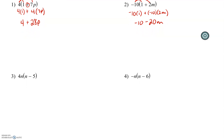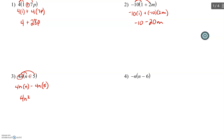Numbers aren't the only thing you can distribute. You can also distribute variables, because variables are symbols that represent numbers, so we can treat them just as we treat numbers. So we're going to take 4n and distribute it. There's a minus sign — 4n times 5.